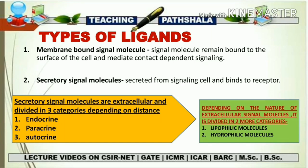If the ligand secreted from a signaling cell has to travel through the bloodstream to reach the location where its receptor is present, that type of ligand is termed an endocrine ligand, because it takes the help of the bloodstream. If it is a paracrine ligand, the two cells are in close proximity — the signaling cell secretes a ligand and it binds to a receptor on a nearby target cell. For autocrine ligands, the signaling cell produces the autocrine factor, and that factor binds to a receptor on the same cell.